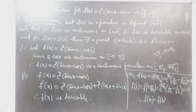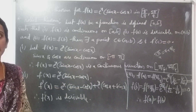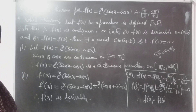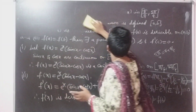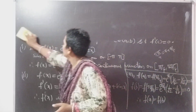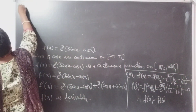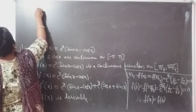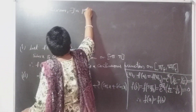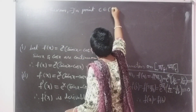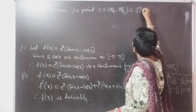The three conditions of Rolle's theorem are satisfied: first, f of x is a continuous function; second, f of x is derivable; third, f of a equal to f of b. By Rolle's theorem, there exists a point c belonging to open interval a comma b, that is pi by 4 comma 5 pi by 4, such that f dash of c equal to 0.